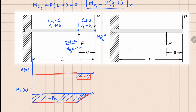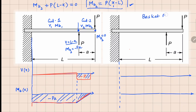Now let me give you another simple way of doing this without doing all these cuts. We have done three problems so far, so we should be getting comfortable with the cut method. This new method I call the basket method. In this basket method, we go to the right end of the beam and imagine holding a basket in your hand. In that basket you collect only positive forces — whenever you get a positive force you collect it, and if it's a negative force you throw it away from your basket.